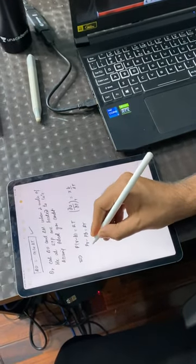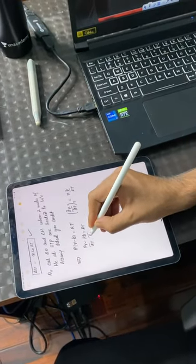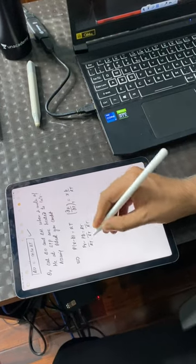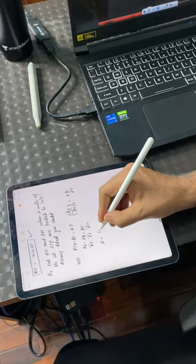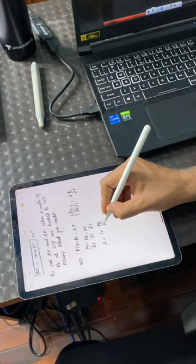Okay, divide throughout by RT. I mean, divide throughout by RT. So, it's going to be Z is equal to 1 plus PB divided by RT.